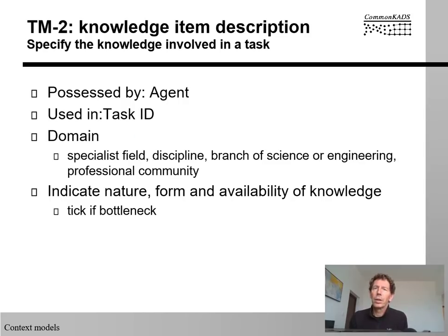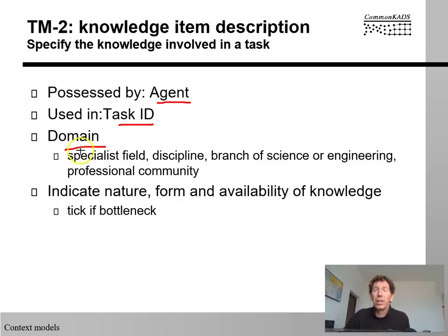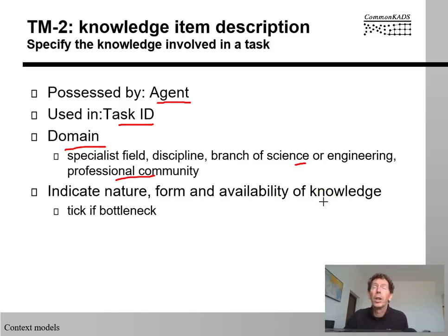Now we move to Worksheet 2. In Worksheet 2 we're concerned with the knowledge items that are involved in the task, whereas in Worksheet 1 we were concerned with the tasks and how they depend on each other. For each of the knowledge items, we're going to write down who possesses the knowledge, give the knowledge item an ID for reference, what is the domain of that knowledge item — is it a specialist field, does the knowledge come from a professional community, or is it a branch of science or engineering — and indicate the nature, form, and availability of the knowledge. Is it available in written form, only in the heads of people, only informally, or is it even physical skills? And tick if this is a bottleneck in the current execution of the task.